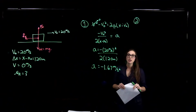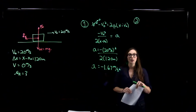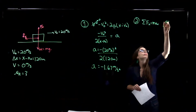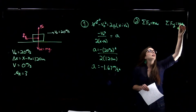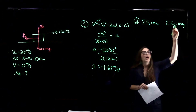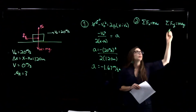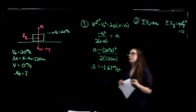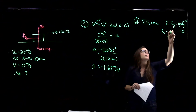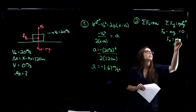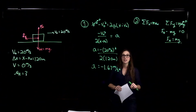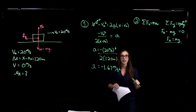Now to find the coefficient of kinetic friction, we use Newton's second law in both the x and y directions. The y-component gives us the normal force. There is no acceleration in the y-direction, so: normal force minus mg = 0, meaning the normal force equals mg. The normal force always equals the weight of the object on a flat surface.